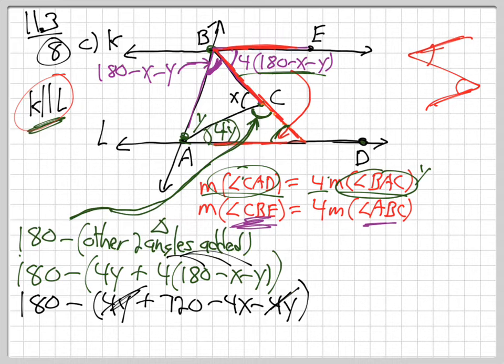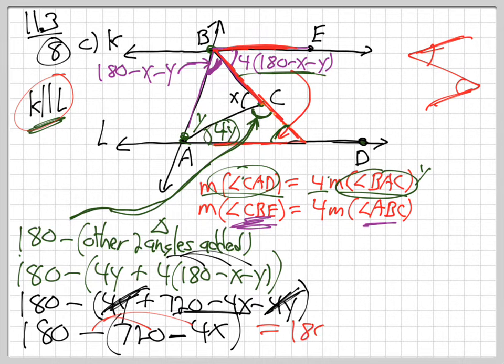180 minus 720 plus 4X. Was that too quick? Maybe I better take that slower. Here, let me help, I'll take it a little slower. Okay, so these guys dropped out, 4Y minus 4Y. I've got 720 minus 4X left. And then that minus sign is going to distribute. So we get 180 minus 720.